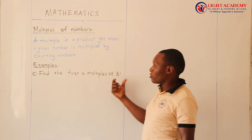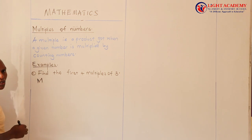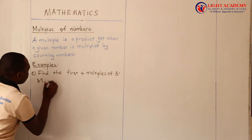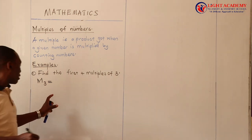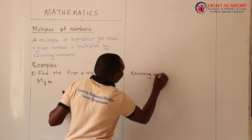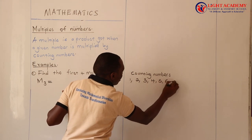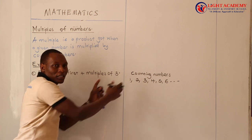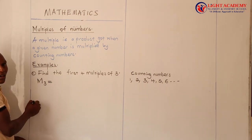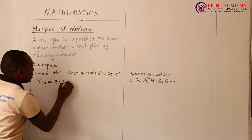Find the first four multiples of three. Just like we've said, we get the multiples when we multiply a given number by counting numbers. The given number here is three. We can write: multiples of three, written as M(3). We shall pick from the counting numbers one number at a time and multiply it with three. So: 3 multiplied by 1 equals 3. Then 3 multiplied by 2 equals 6.